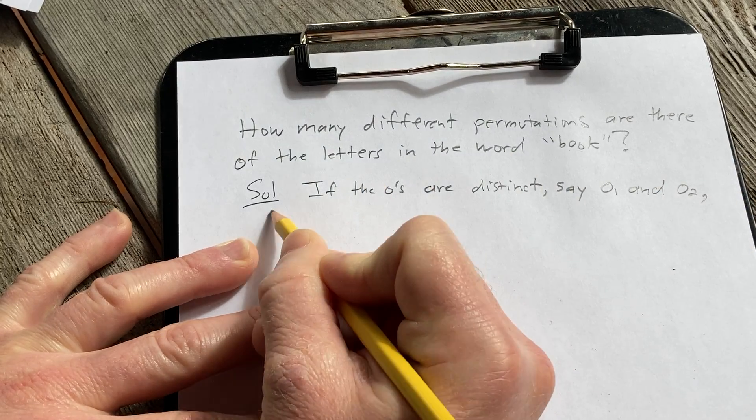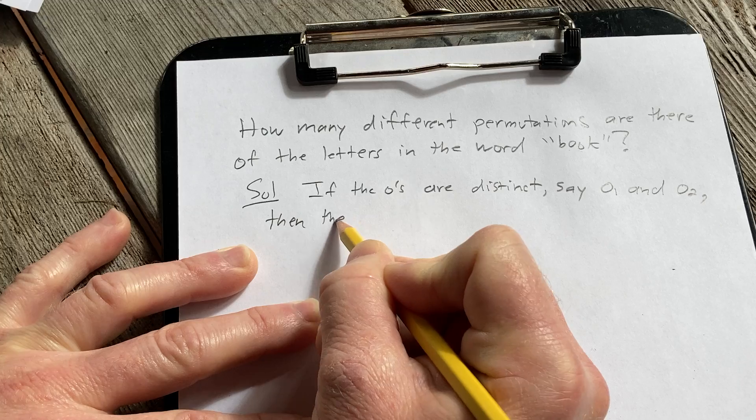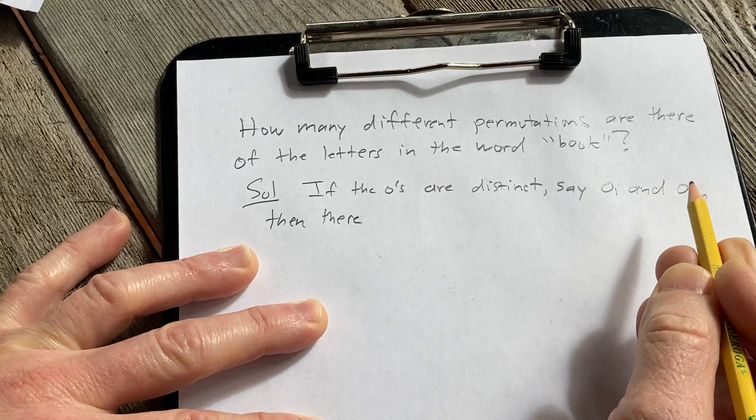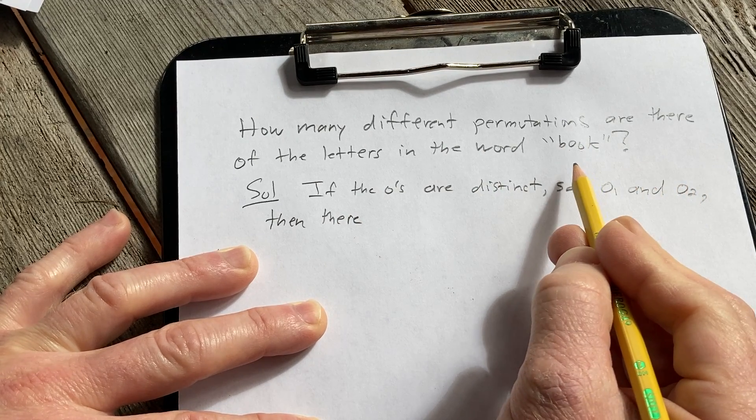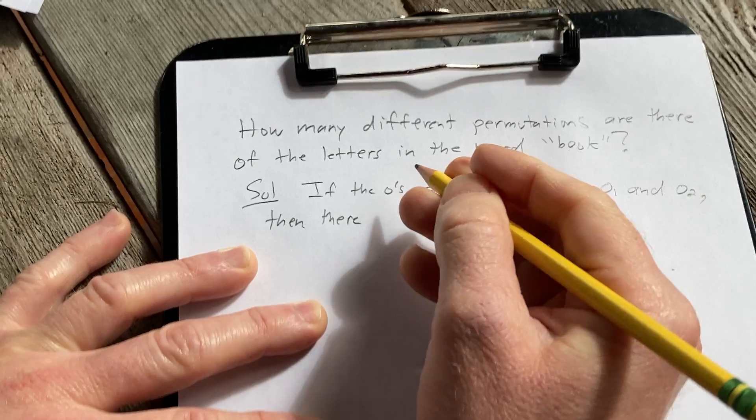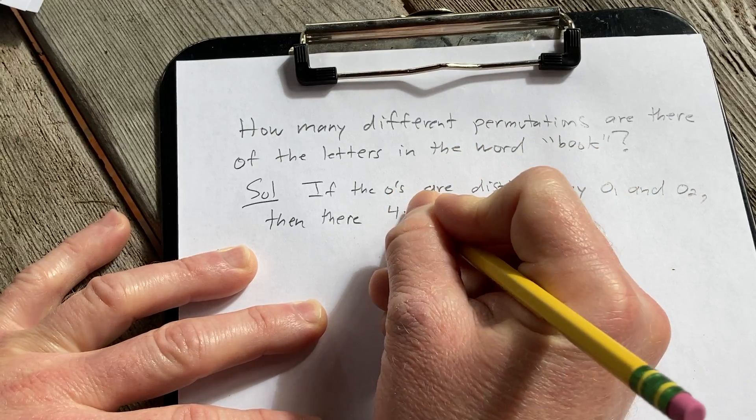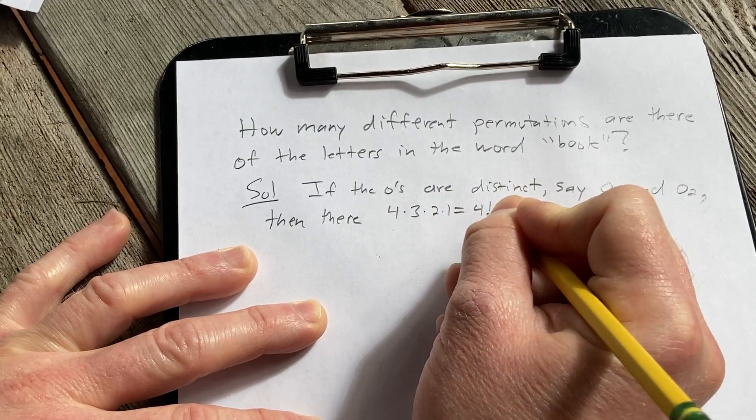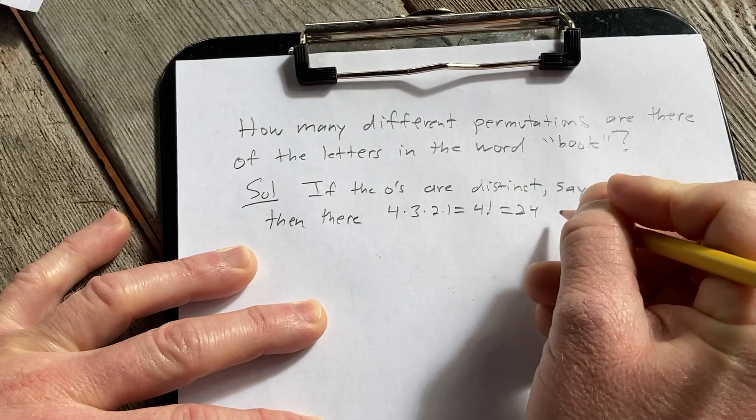Then in this case, we have four distinct letters: B, O sub 1, O sub 2, and K. So then there are 4 times 3 times 2 times 1 or 4 factorial or 24 permutations.